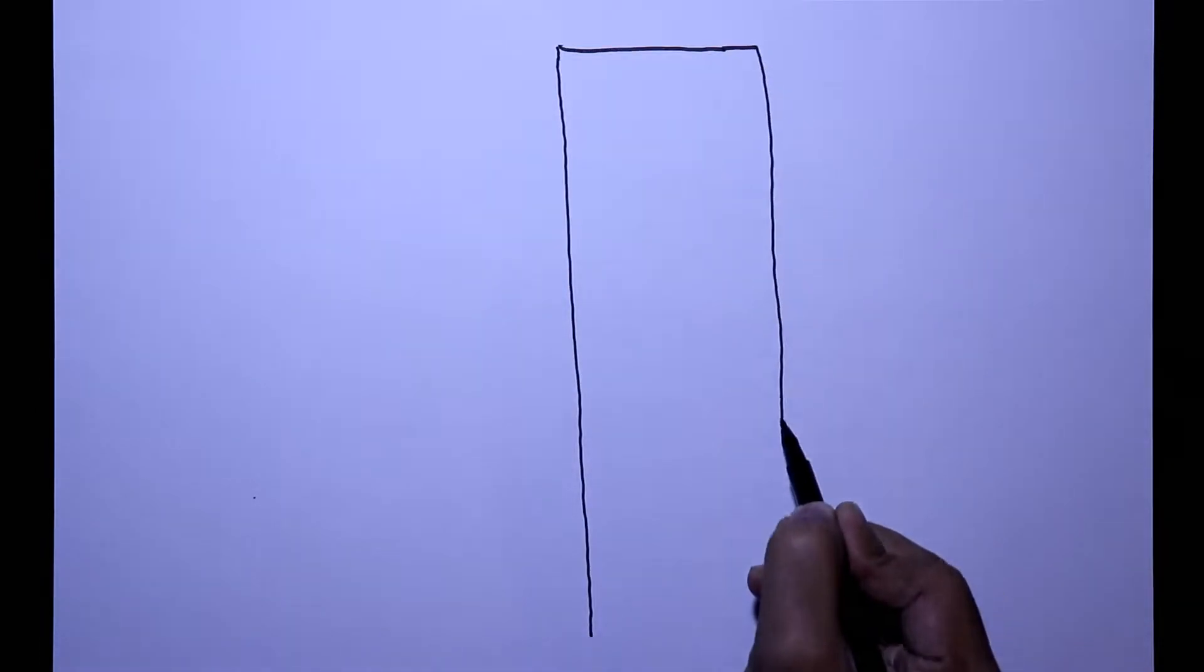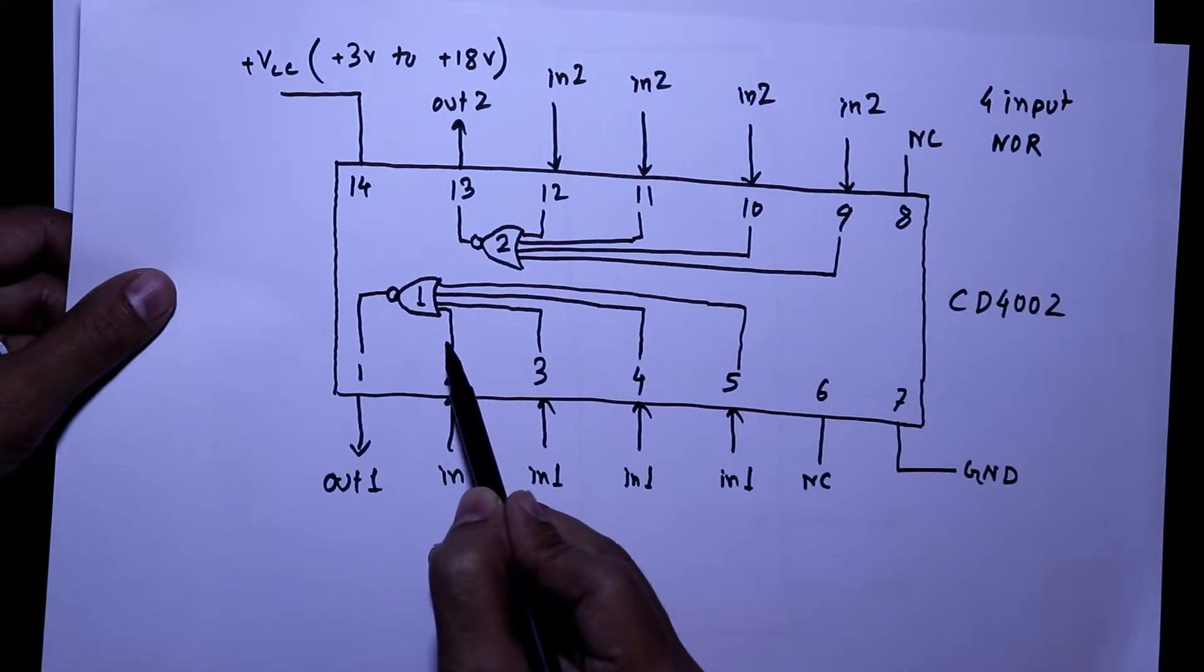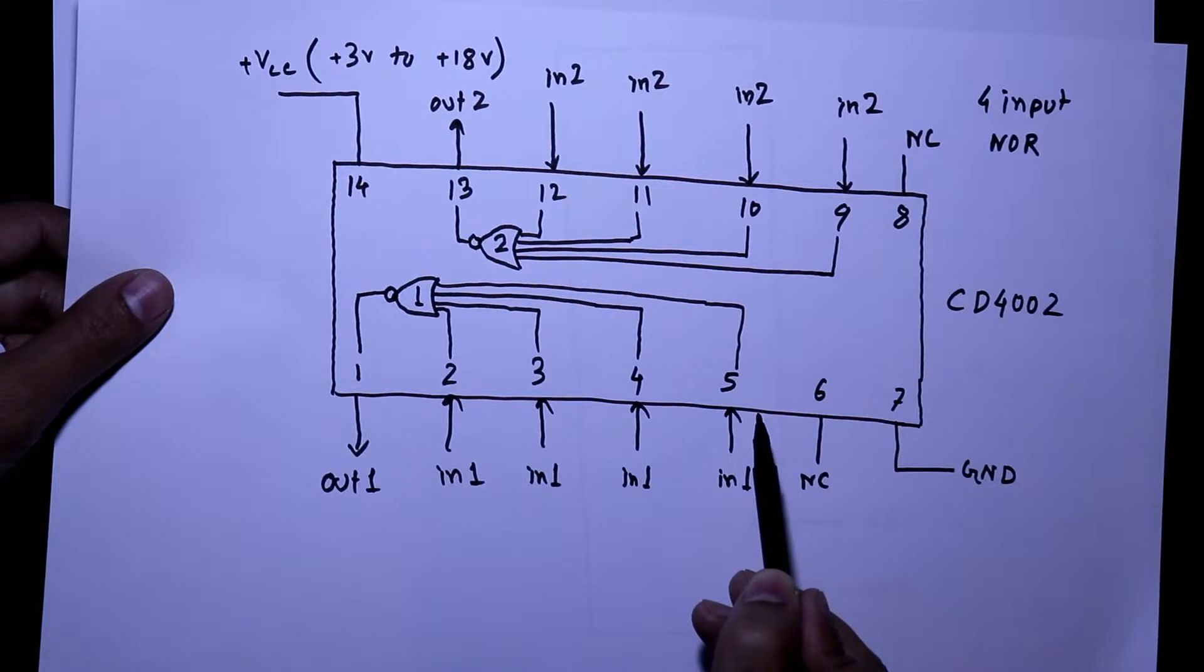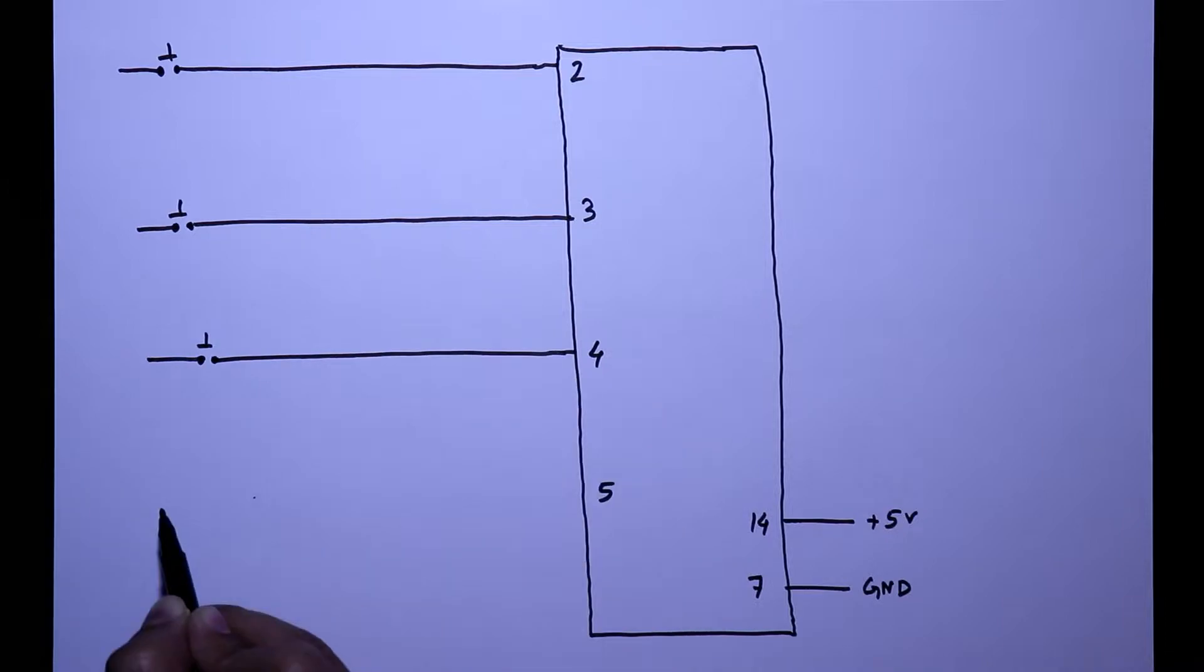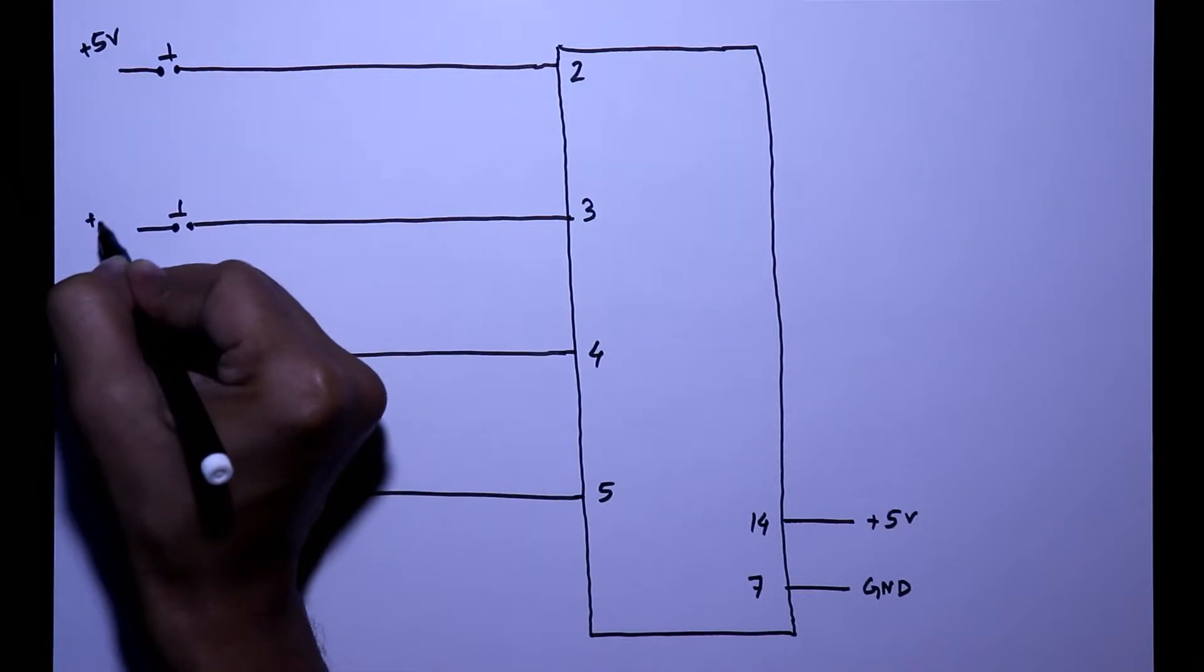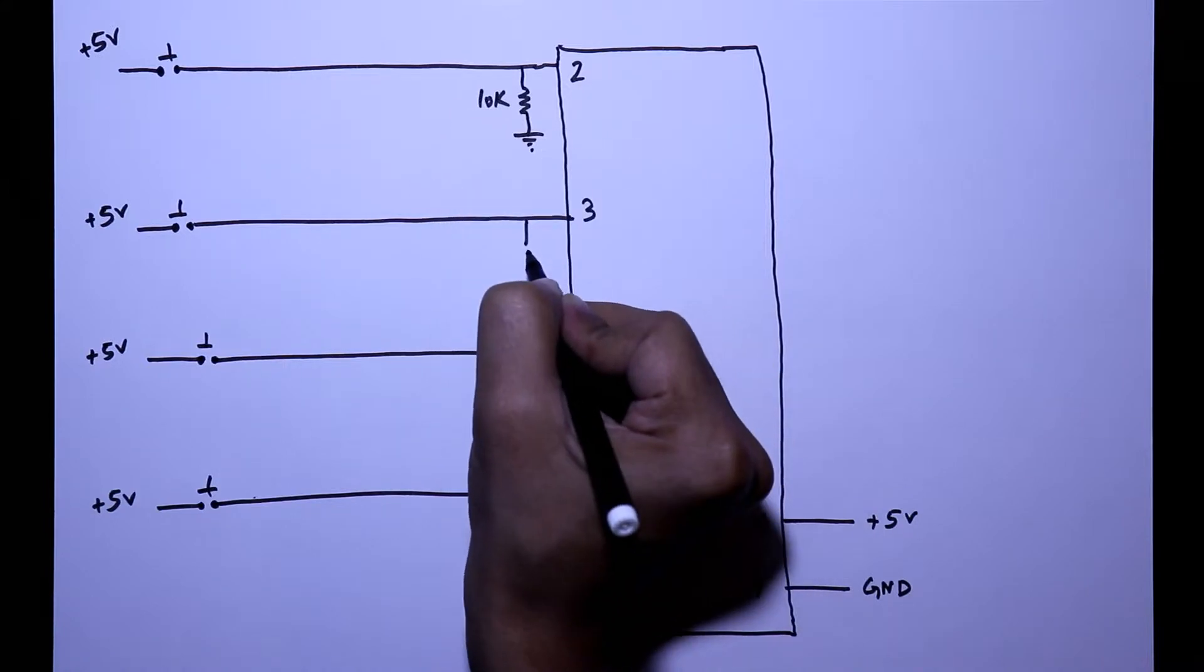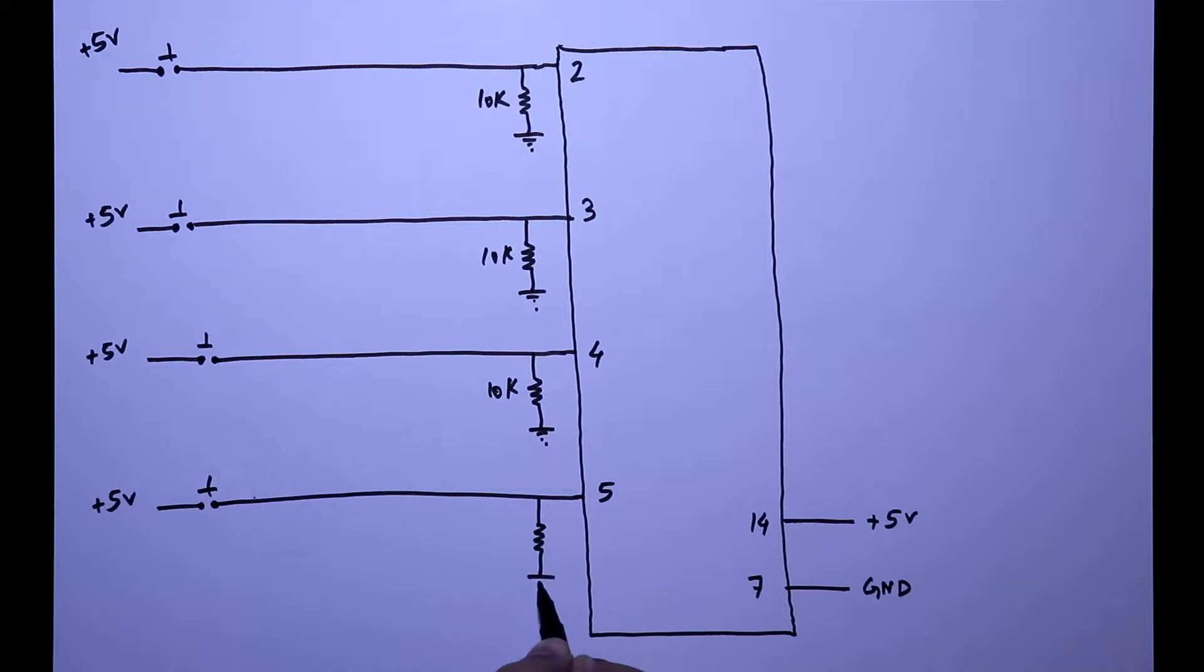Here this is the IC. Pin 14 is connected to plus 5V and pin 7 is connected to ground. For gate 1, pin number 1 is output and pins 2, 3, 4, 5 are all inputs. With each input, a push button switch is connected. The other pin of the switch is connected to plus 5V, and also with the input we have to connect pull-down resistors. The value of this resistor is 10K ohms.